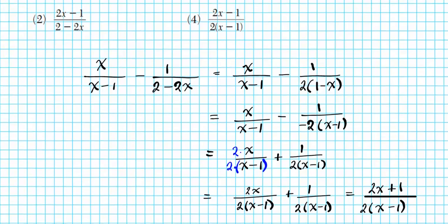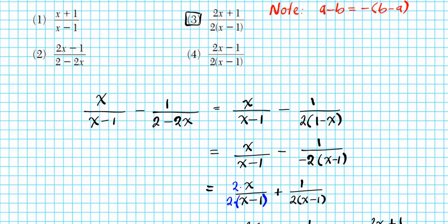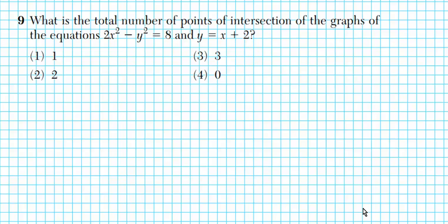Our answer is option number three. Alright. So it says number nine. Number nine reads, what is the total number of points of intersection of the graphs of the equations? Two x squared minus y squared equals eight and y equals x plus two. So we have a system of equations here, a quadratic and a conic. So the question is how many times does this line right here intersect this conic section right here? Of course, we can solve this graphically, but I'm going to show you how to do this algebraically. So we have a system of equations. That's how I'm going to solve this. I'm going to solve it as a system.